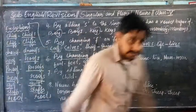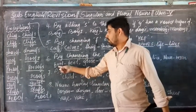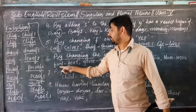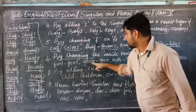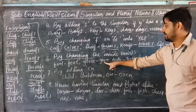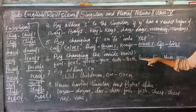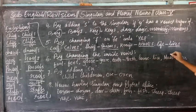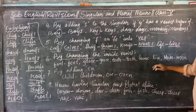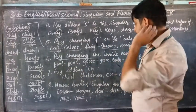Point number 6: changing the inside vowel. For example, 'foot' has double-O inside, and we change it to double-E to get 'feet'. 'Goose' has double-O, changed to double-E: 'geese'. 'Tooth' has double-O, changed to double-E: 'teeth'. 'Louse' changes the O-U to I: 'lice'. 'Man' changes the vowel A to E: 'men'. These words form their plural by changing the inside vowel.